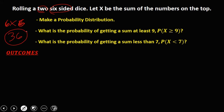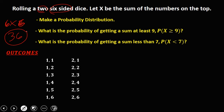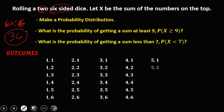These are the possible outcomes: (1,1), (1,2), (1,3), (1,4), (1,5), (1,6); (2,1), (2,2), (2,3), (2,4), (2,5), (2,6); (3,1), (3,2), (3,3), (3,4), (3,5), (3,6); (4,1), (4,2), (4,3), (4,4), (4,5), (4,6); (5,1), (5,2), (5,3), (5,4), (5,5), (5,6); (6,1), (6,2), (6,3), (6,4), (6,5), (6,6). These are all 36 possible outcomes when rolling two six-sided dice.